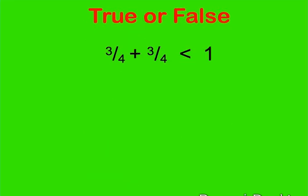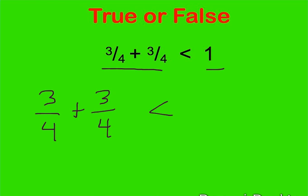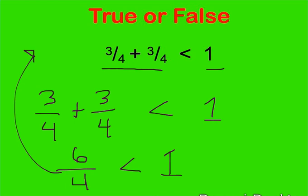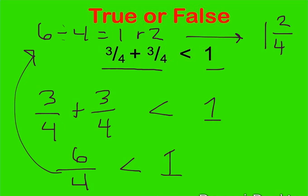Here is our next true or false question. On the left side we have three-fourths plus three-fourths, and on the right side we have 1. Adding three-fourths plus three-fourths: 3 plus 3 is 6 and the denominator stays the same, giving us six-fourths. Converting to a mixed number, 6 divided by 4 is 1 remainder 2, which is 1 and two-fourths. Is 1 and two-fourths less than 1? No — it is more than 1, so this statement is false.